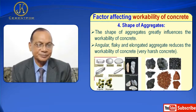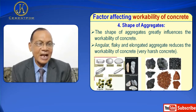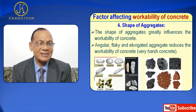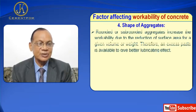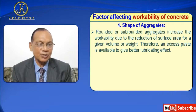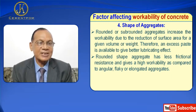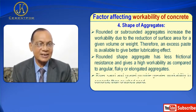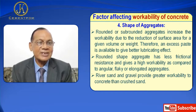Next, shape of aggregate. The shape of aggregates greatly influences the workability of concrete. Angular, flaky, and elongated aggregate reduces the workability of concrete, resulting in very harsh concrete. Rounded or sub-rounded aggregates increase the workability due to the reduction of surface area for a given volume or weight; therefore, excess paste is available to give a better lubricating effect. Rounded shape aggregate has less frictional resistance and gives higher workability as compared to angular, flaky, or elongated aggregate. River sand and gravel provide greater workability to concrete than crushed aggregate.